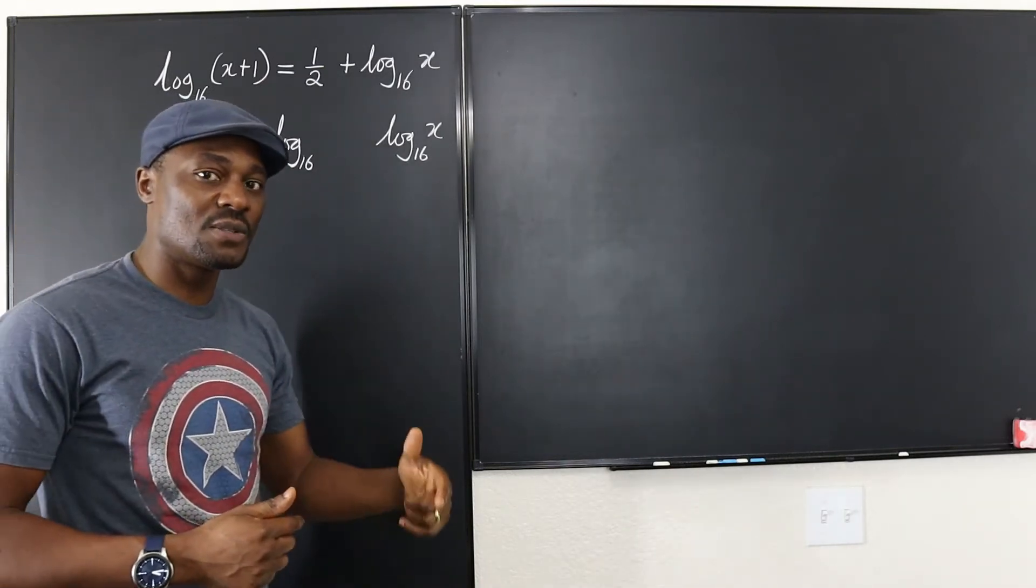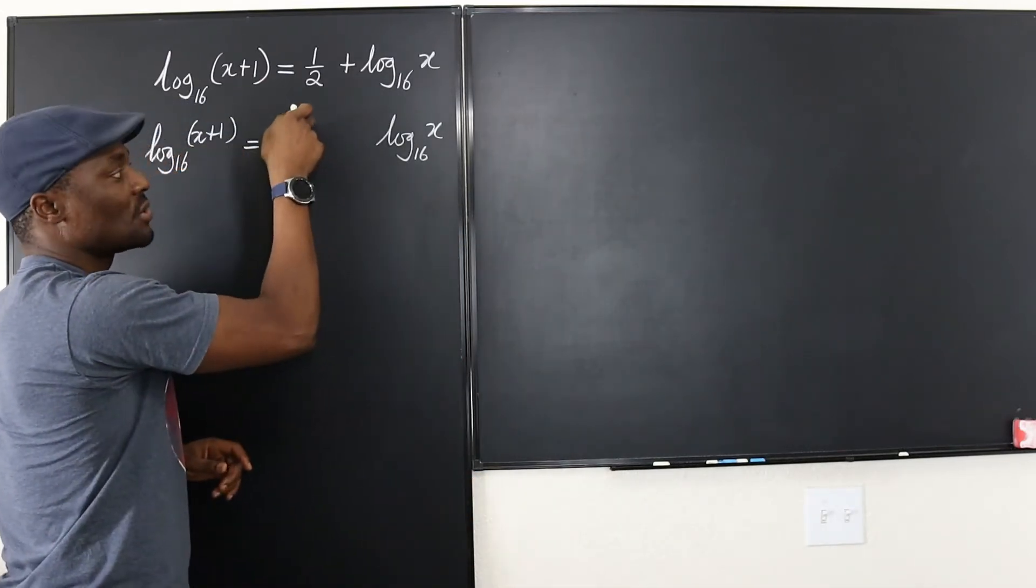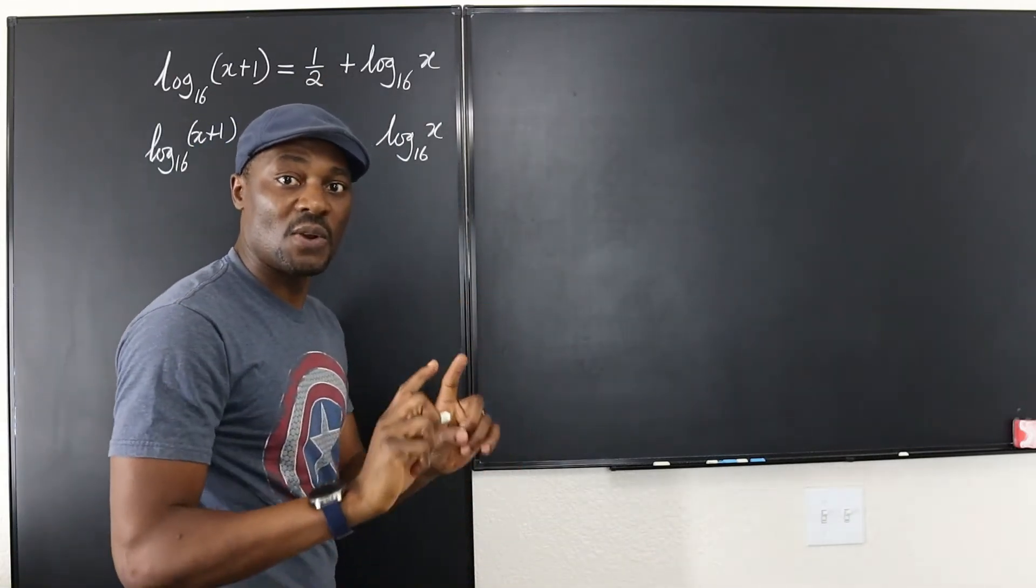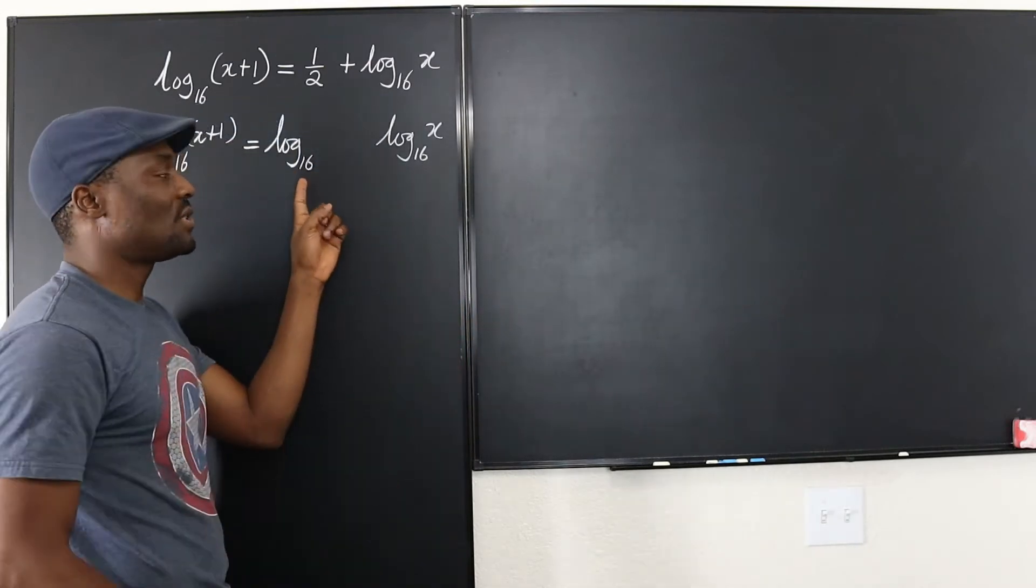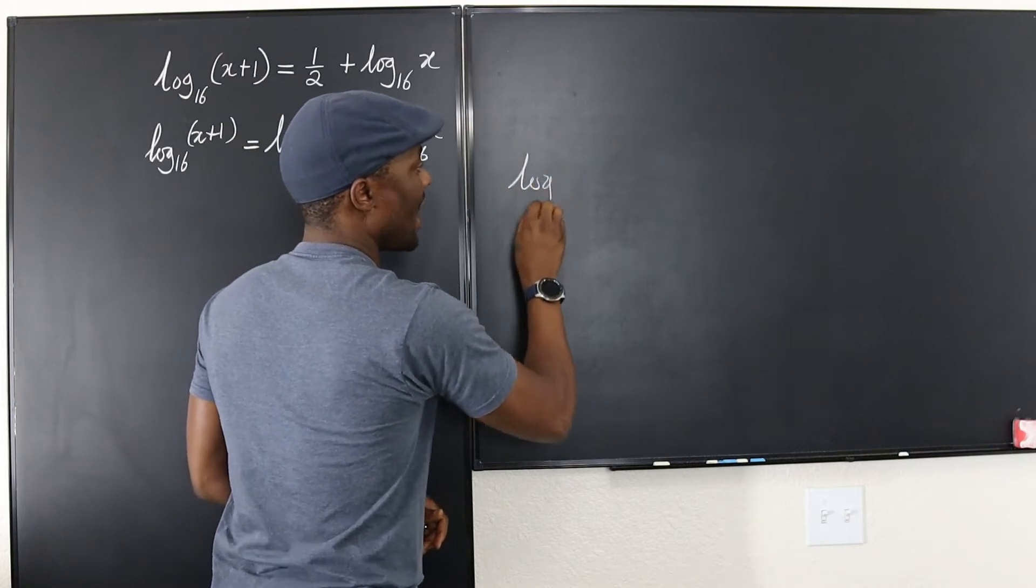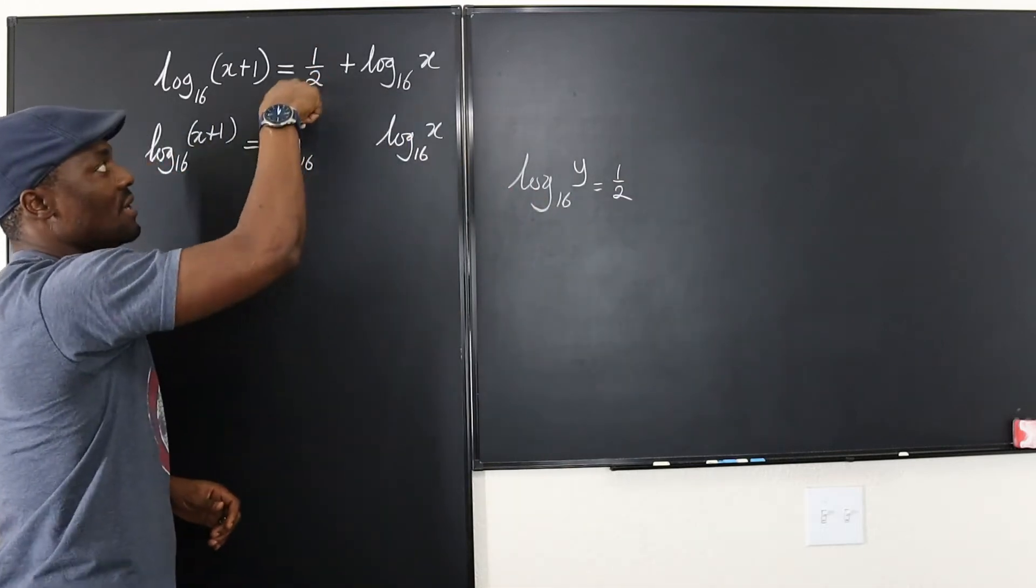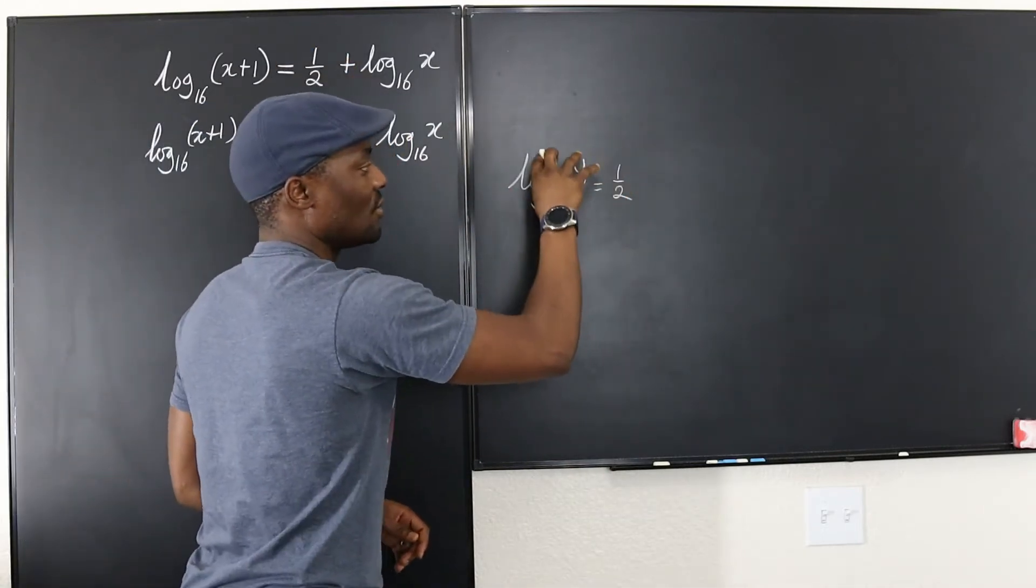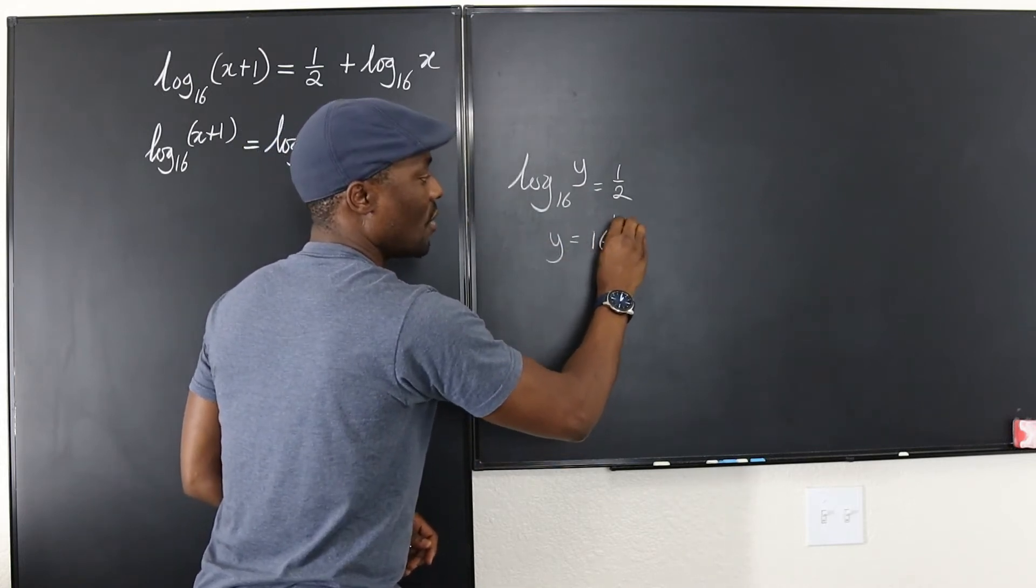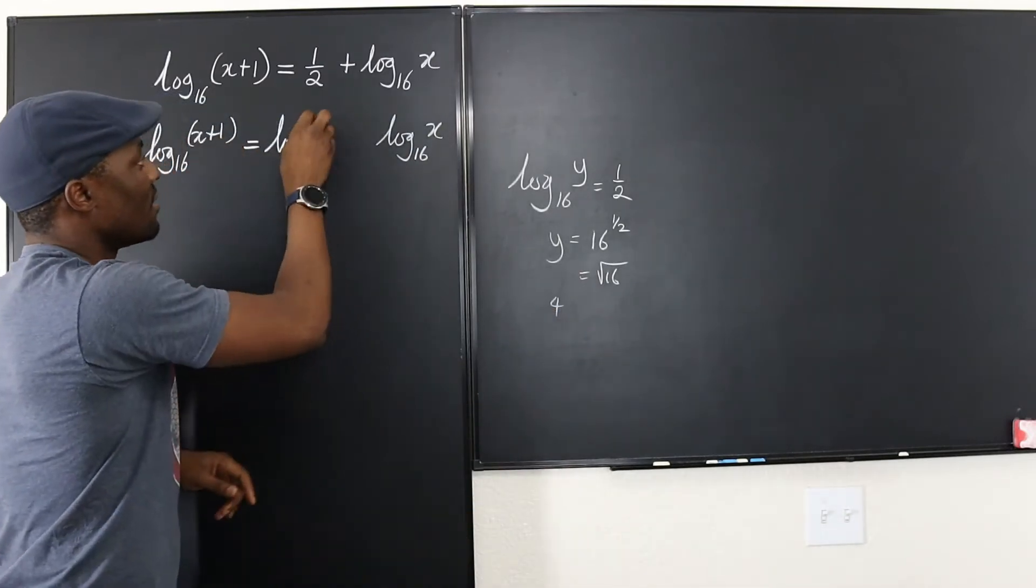Remember, it's the inverse function of exponential functions. So it means if I want to know what number is going to be here, it's simply 16 to the power of one half. Because the definition of logarithm is the power to which the base must be raised to obtain that number. So for example, if I write the logarithm of y to base 16 is this one half that we have here, what will this y have to be? Well, y has to be 16 to one half, which is the square root of 16, which is going to be 4. So I'm going to write 4 here.